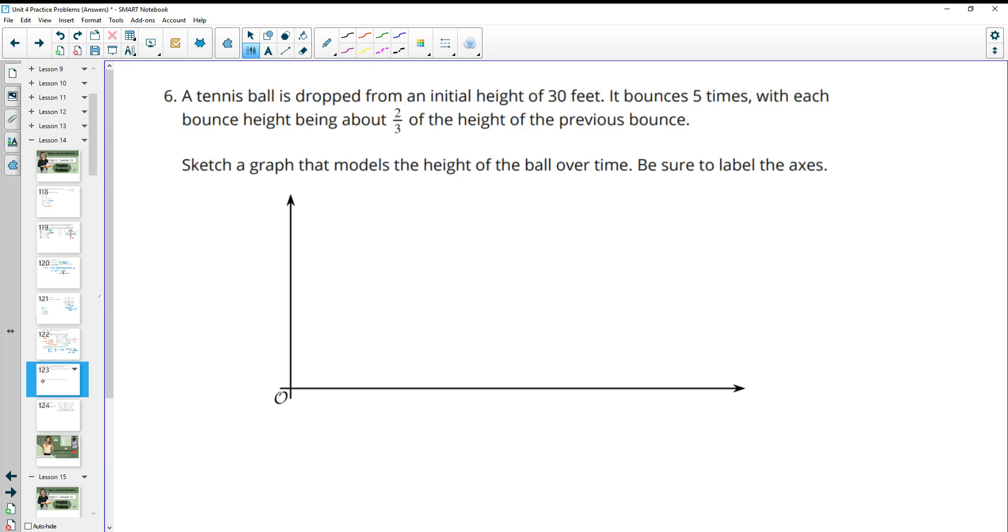Number nine, a tennis ball is dropped from an initial height of 30 feet. It bounces five times. So we've got an initial height of 30 feet. It bounces five times, with each bounce height being two-thirds of the height of the previous bounce. Sketch a graph that models the height of the ball over time. Be sure to label your axes.